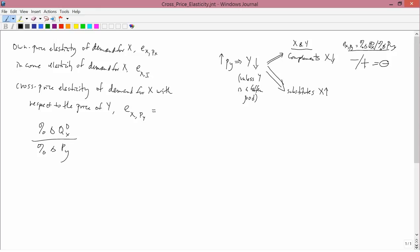In the substitutes case, the percent change in the quantity demanded of x, well, x has gone up. The percent change in the price of y, the price of y has gone up. So this thing is positive. What we conclude is that complements have negative cross-price elasticity and substitutes have positive cross-price elasticity.